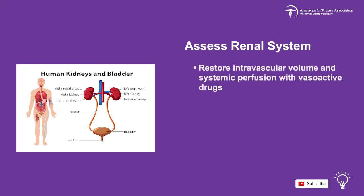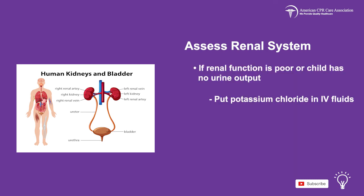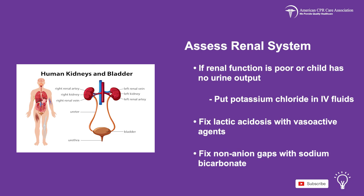Restore intravascular volume and systemic perfusion with vasoactive drugs. Administer loop diuretics to children with volume overload and congestive heart failure. Avoid potassium chloride in IV fluids if renal function is poor or the child has no urine output. Fix lactate acidosis with vasoactive agents and fix non-anion gap acidosis with sodium bicarbonate.